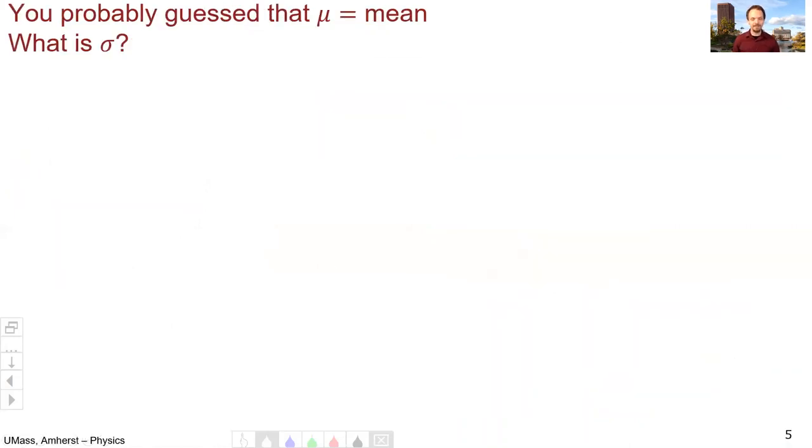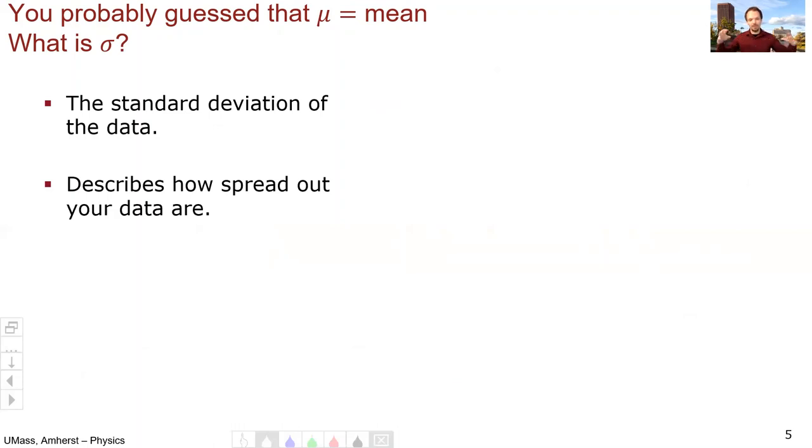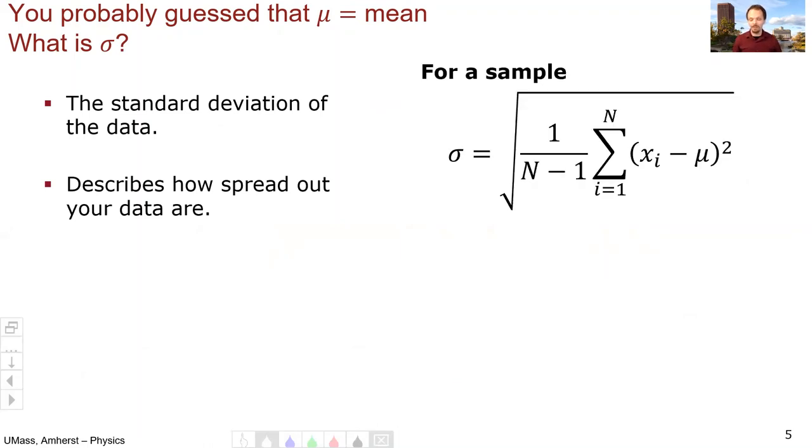So you've probably guessed that mu is the mean of your data, but what is sigma? I mean, we know it's the width of our distribution, but what more is it than that? It's the standard deviation of your data, and it describes how spread out your data are, right? Is it a wide fat distribution or a narrow skinny one? If you have a sample from some population, you calculate the standard deviation using this formula, which is super ugly. So we'll go through it piece by piece to understand how this formula works.